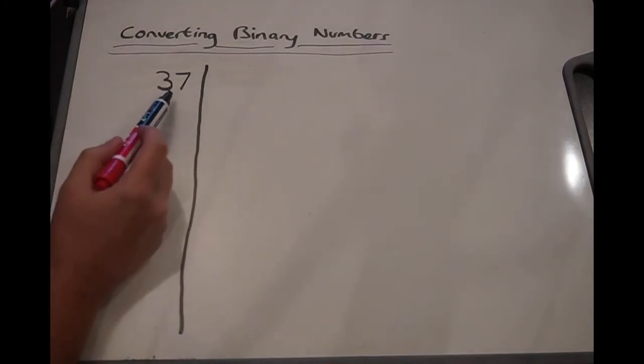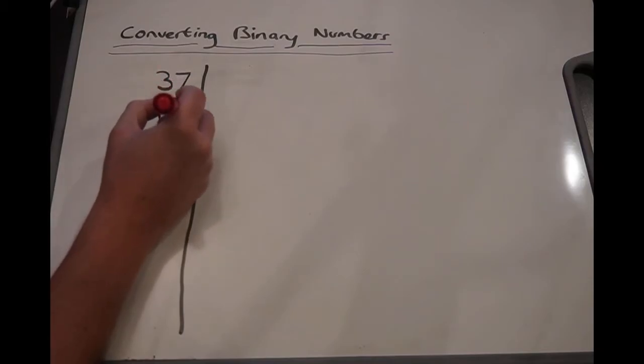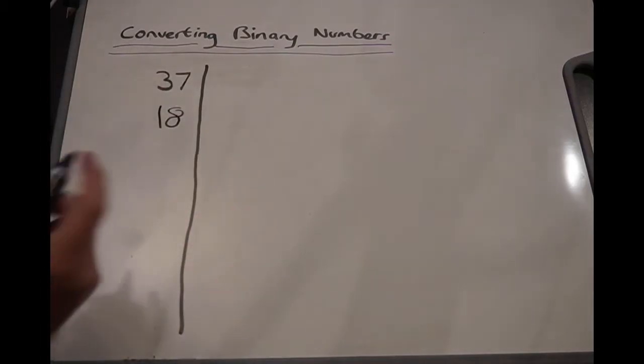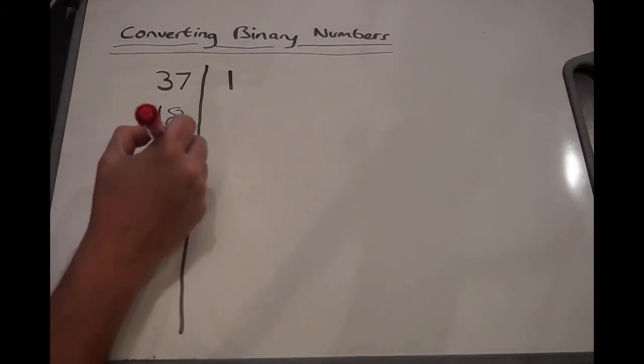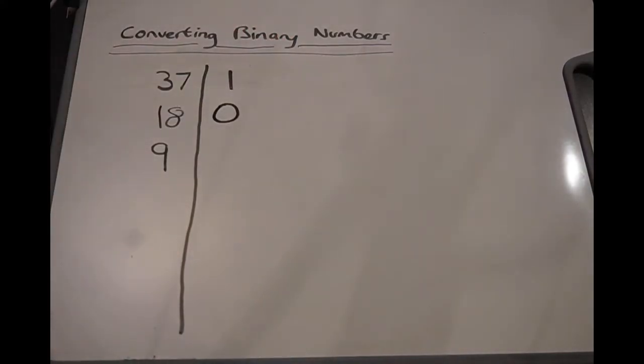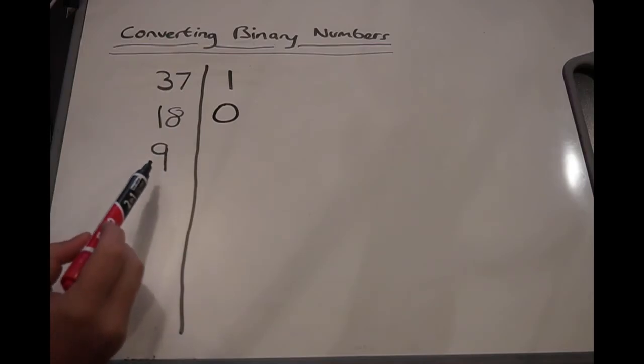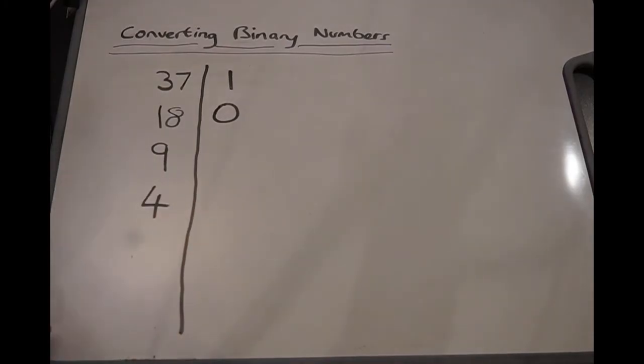So how many times does 2 go into 37? Well, hopefully we all recognize that it goes 18 times, and it would leave 1 remaining. And then we do the same thing, just repeat the same thing, reiterate the same thing. So how many times does 2 go into 18? It goes 9 times, and it leaves a 0. How many times does 2 go into 9? It goes 4 times, and it leaves a 1.